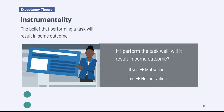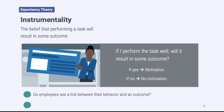Imagine you want to get a promotion in your organization. In order to have instrumentality, you must believe that if you work hard and put in the time and effort, it will result in getting the promotion. If you think that doing hard work will result in getting the promotion, you're going to feel motivated to work hard. If on the other hand you think it doesn't matter how hard you work or how often you go the extra mile — no matter what you do, you won't get the promotion — then you're not going to feel motivated. There has to be a clear link between an employee's behavior and the perceived outcome.